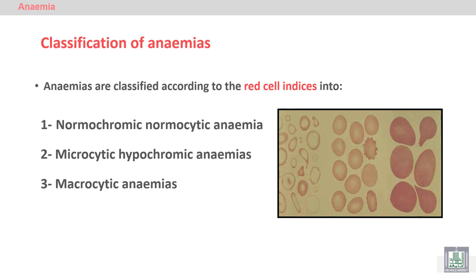Because anemia has many causes, we need to classify it. According to red cell indices — MCV, MCH, and MCHC — we can identify three main types of anemia.